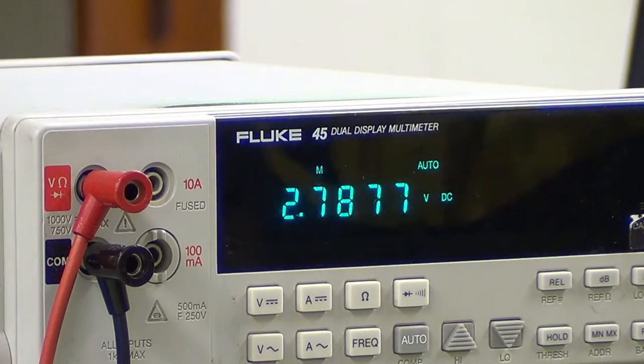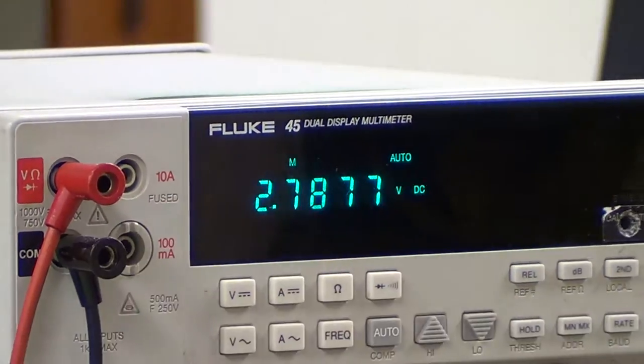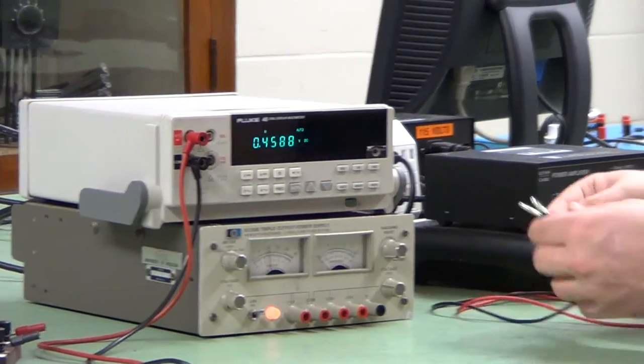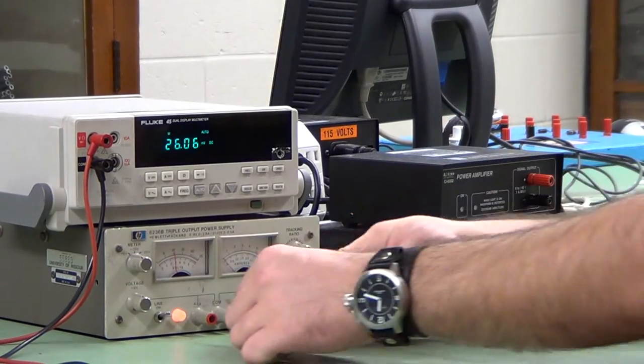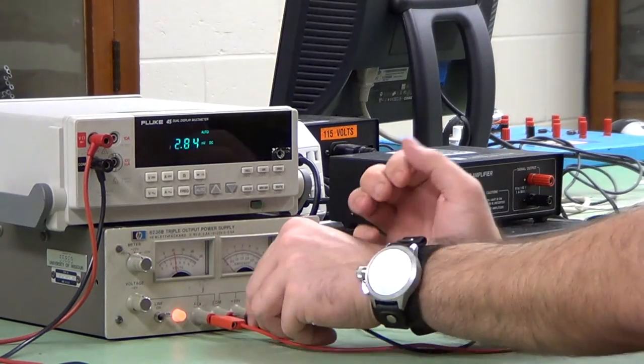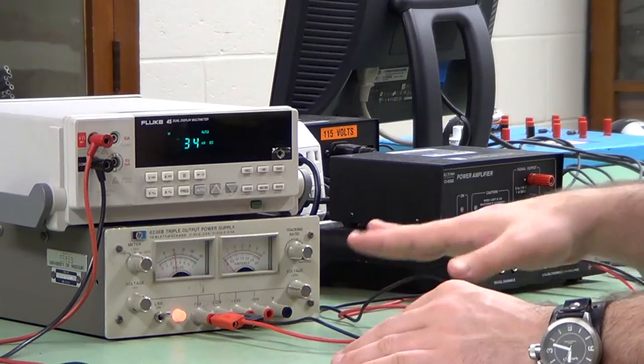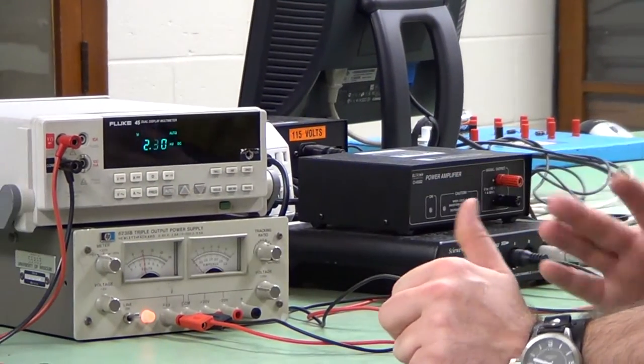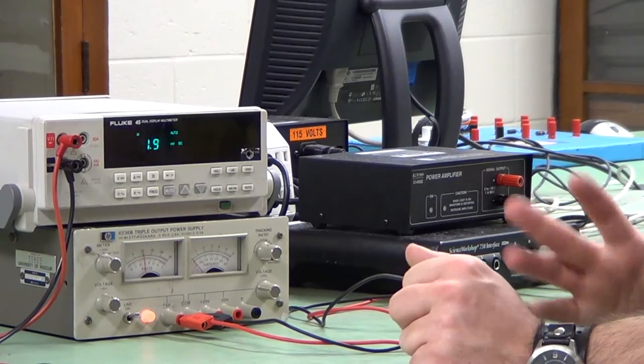Once we get that readout, we're going to disconnect the multimeter, and we're going to plug our Data Studio cables into here. That way, we can compare the Data Studio readout to the multimeter readout, and get an idea of how far off Data Studio is.